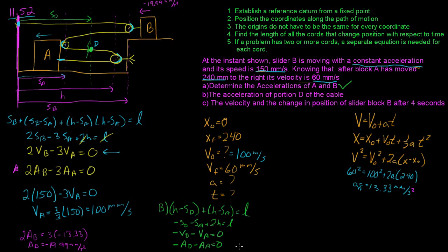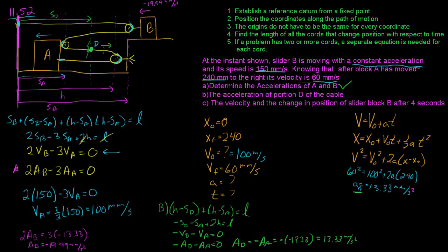Therefore, aD = −aA = −(−13.33) = +13.33 mm/s². Portion D of the cable has an acceleration of 13.33 mm/s² directed to the right.